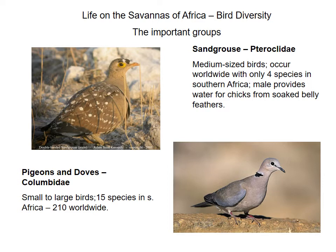The sandgrouse are medium-sized birds found all over the world, with four species in Southern Africa, particularly the double-banded sandgrouse and the Namaqua sandgrouse in drier parts of South Africa. Their belly feathers are adapted to be soaked in water, which is how they carry water back to their chicks at the nest. The pigeons and doves are a very cosmopolitan group found worldwide — about 15 species in South Africa but approximately 210 worldwide — and are not very well represented in the savannahs of Southern Africa.